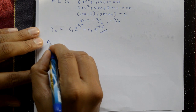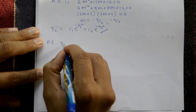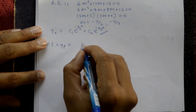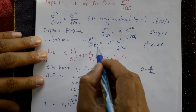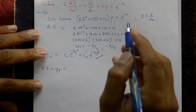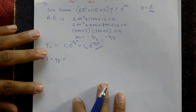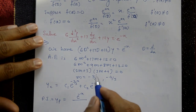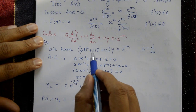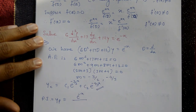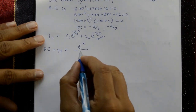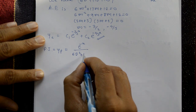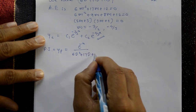Now for the particular integral yp: we have e^(-x) upon f(D), where f(D) = 6D² + 17D + 12.